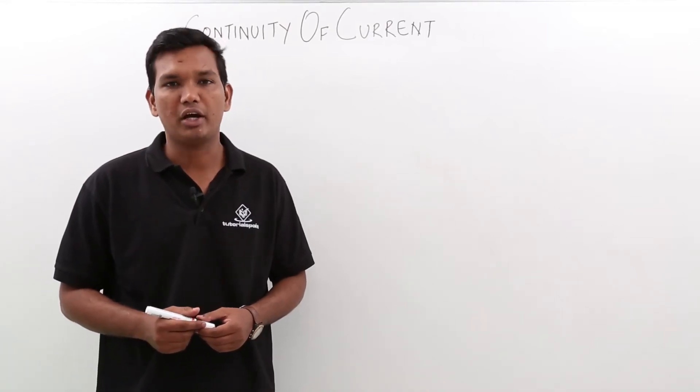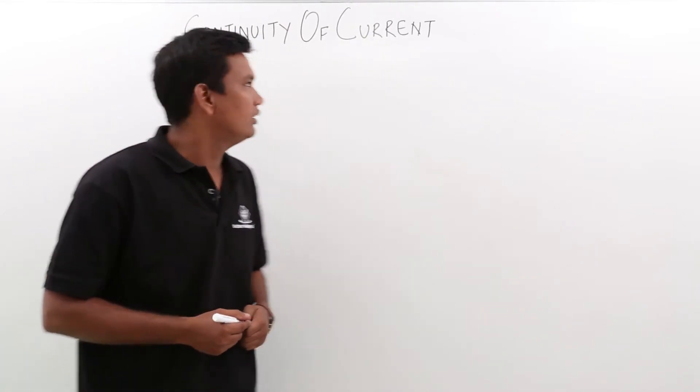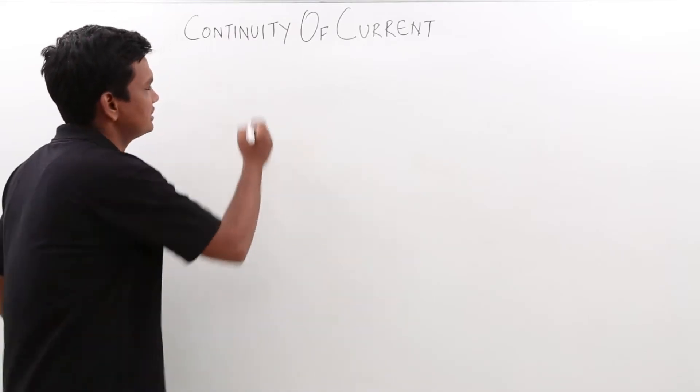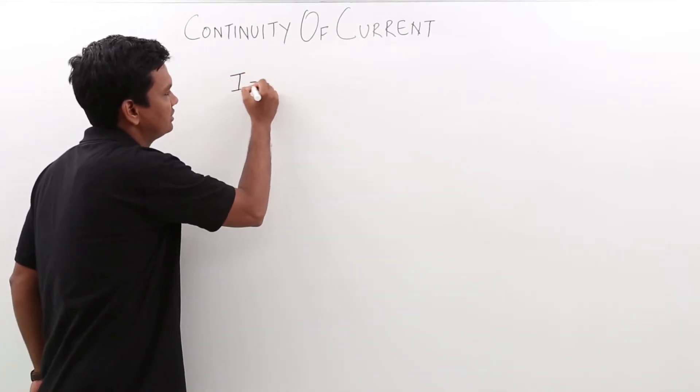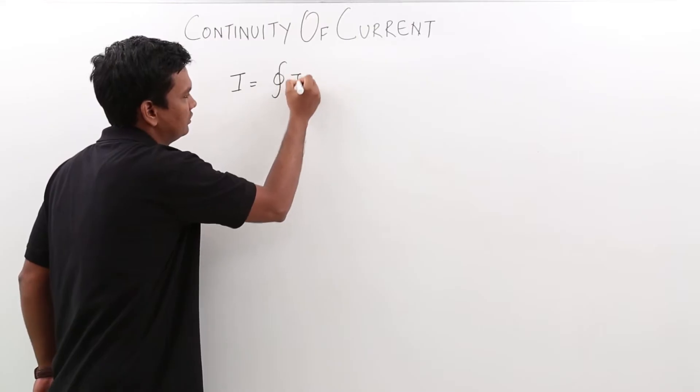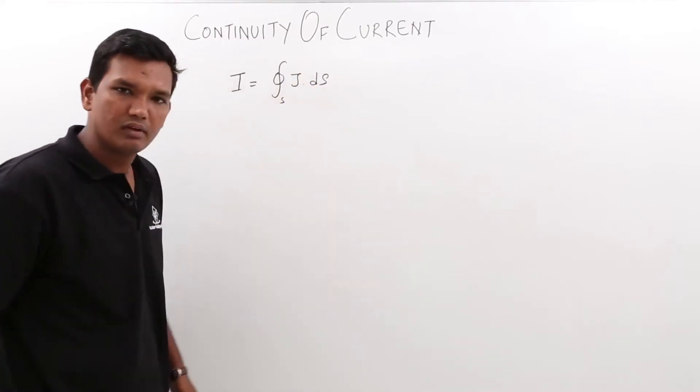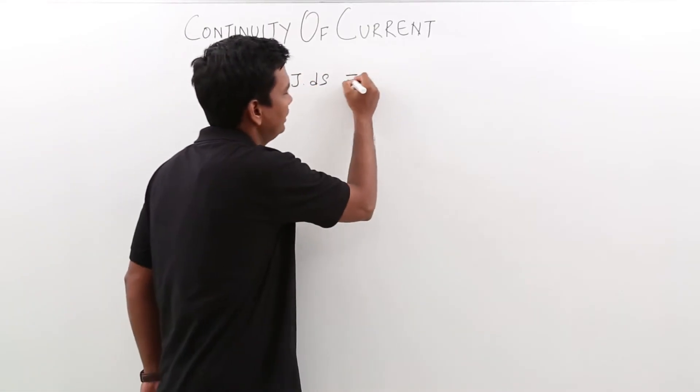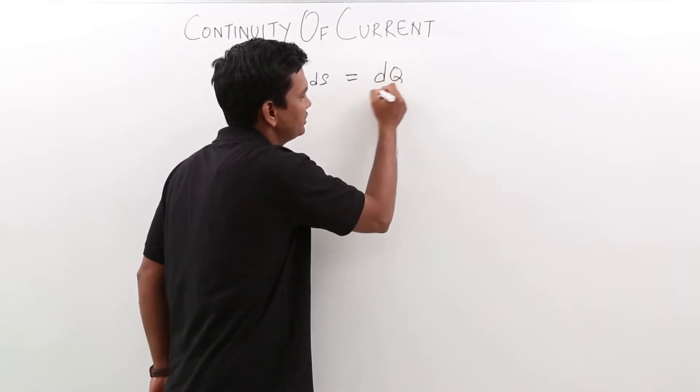In this class, we will discuss about continuity of current. The current over a closed surface is given by I equals... we also know that current is nothing but the rate of change of charge.